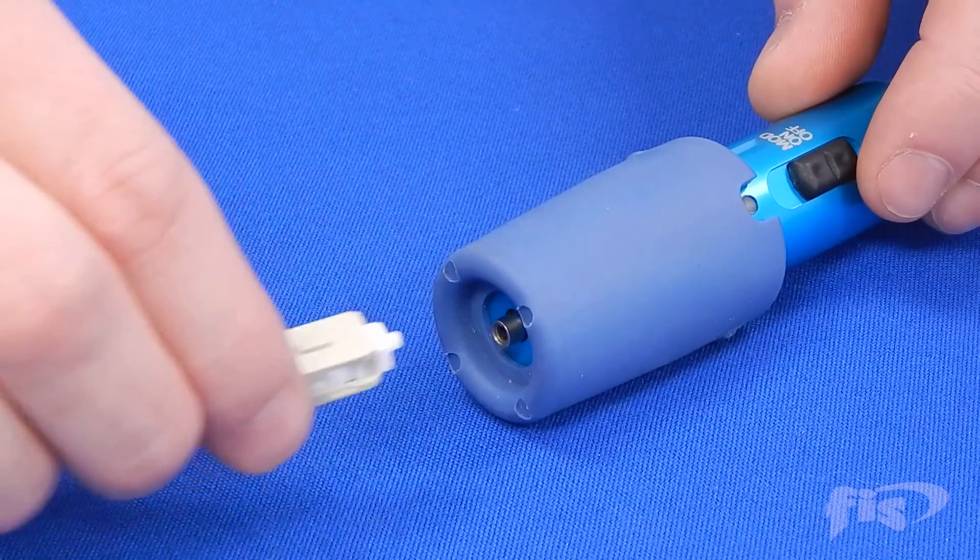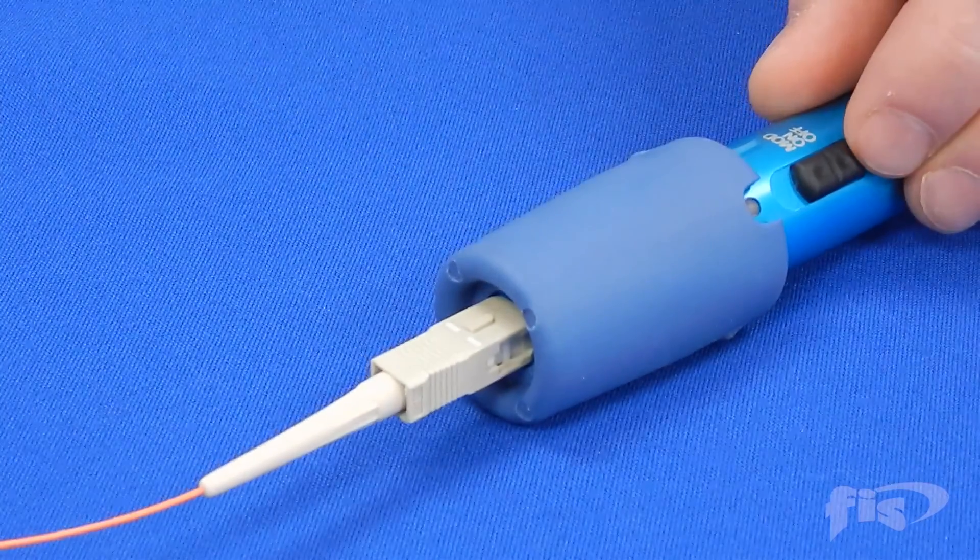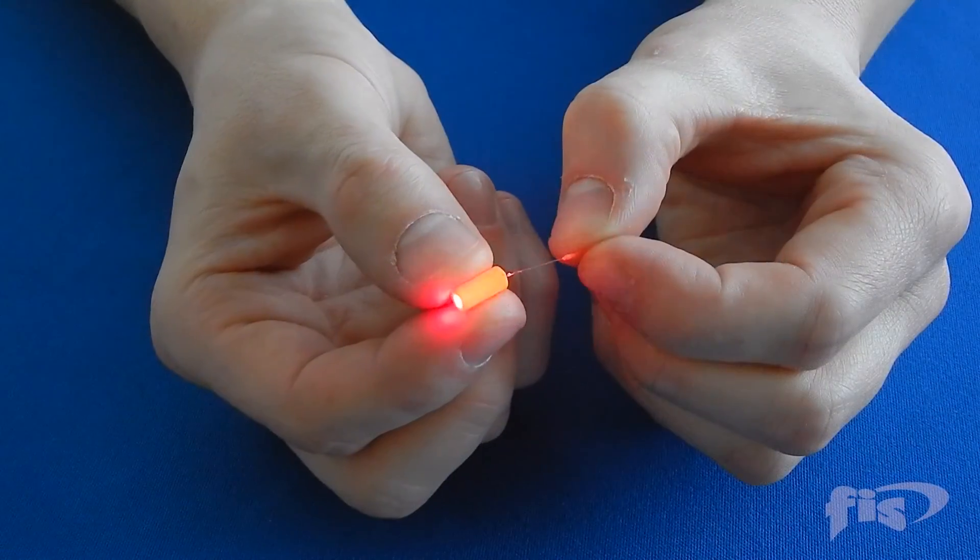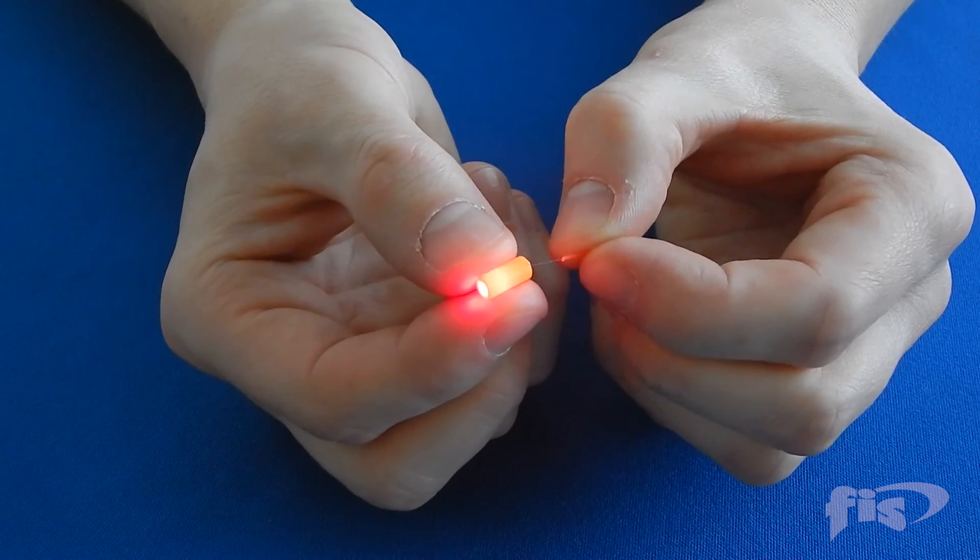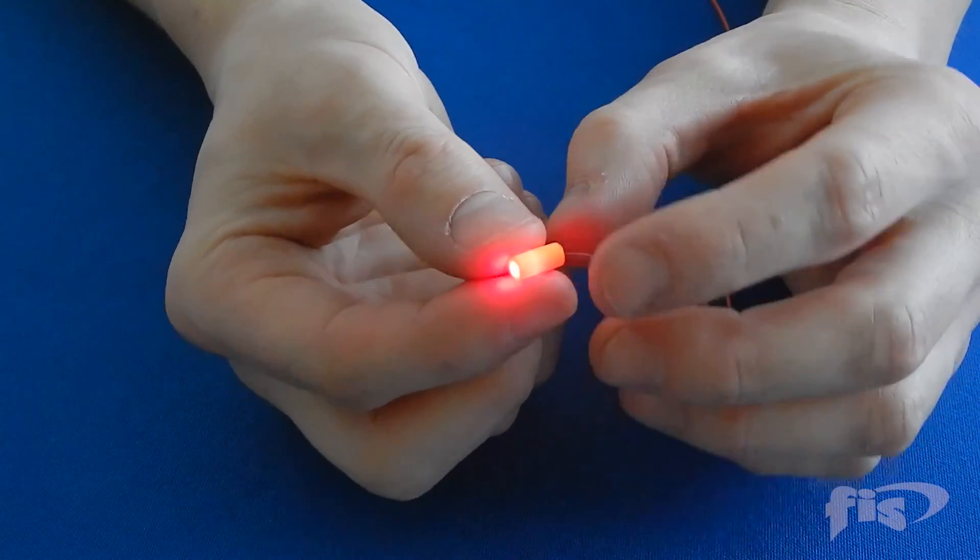To optimize the splice, connect the visual fault locator to the connector end and turn the unit on. Take the lab splice and insert the cleaved fiber halfway through the splice. The red light will be visible in the middle of the lab splice.